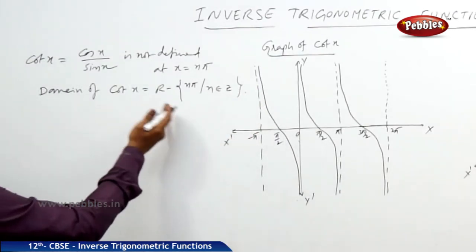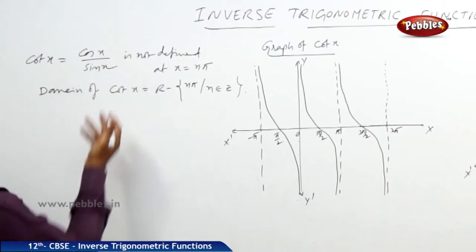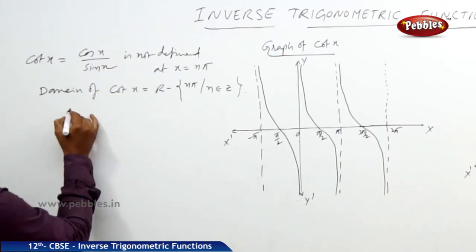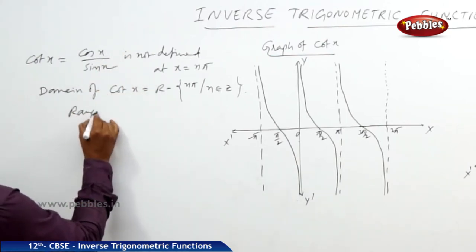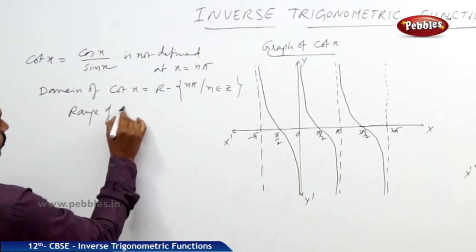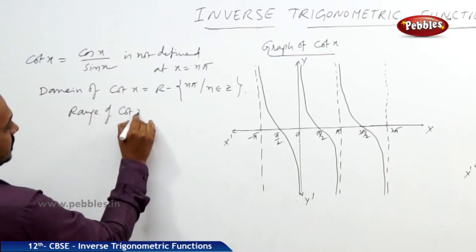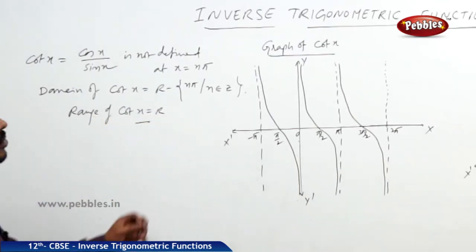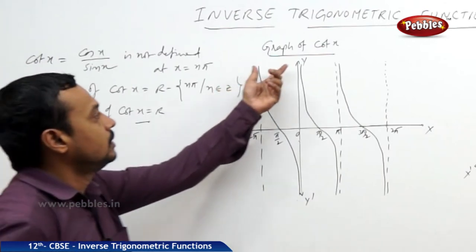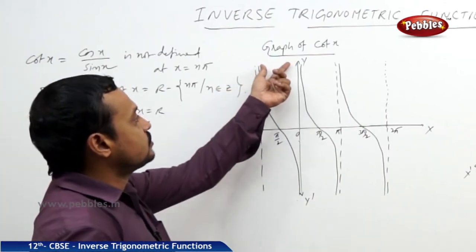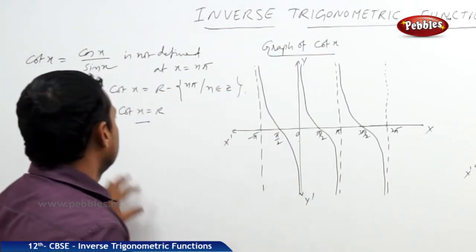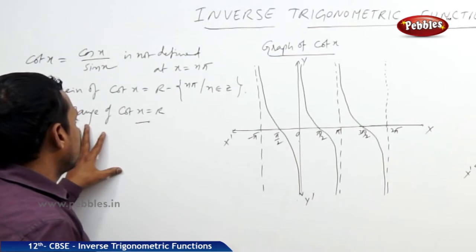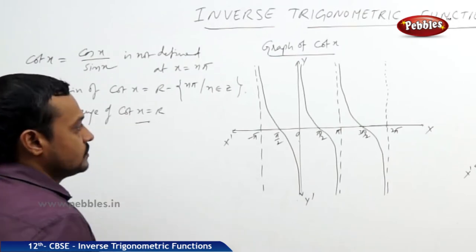Now, what about the range? Of course, the range is always R. The range of cot x is R. While observing the graph of cot x, we can understand the range of cot x.